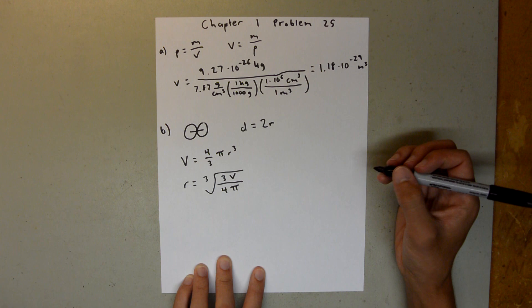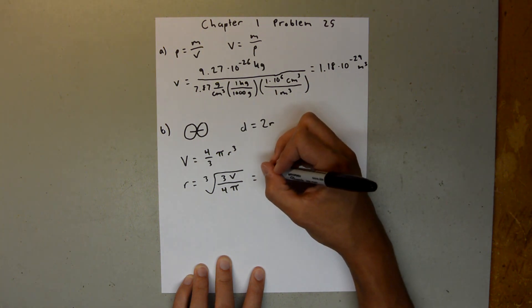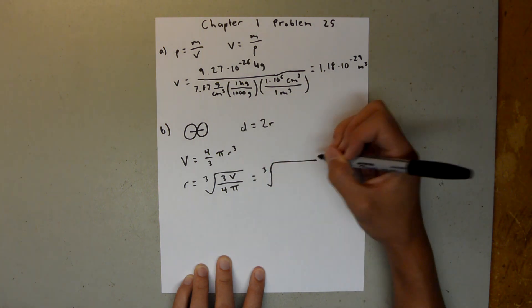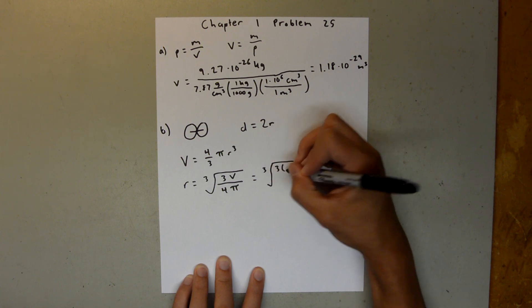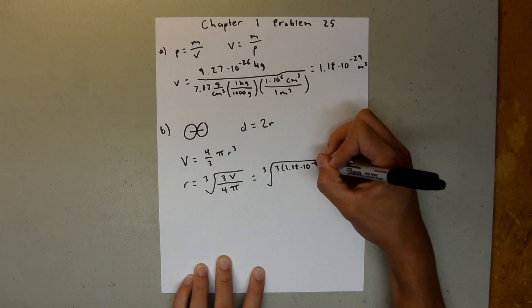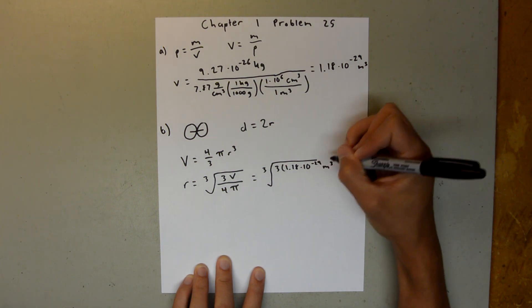And we have all those values, so we can plug those in, and say the cube root of 3 times our volume, which we found up here, 1.18 times 10 to the negative 29th meters cubed.